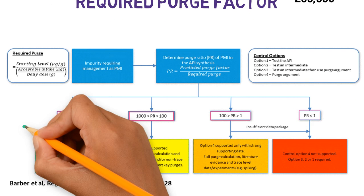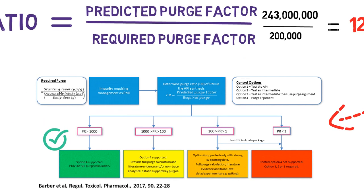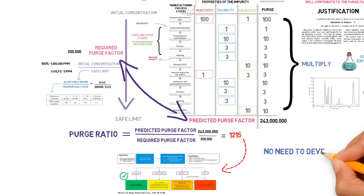This is only an example of how the purge factor can easily show that the manufacturing process is designed to eliminate a specific impurity, and that there is no need to develop and validate analytical methods. In this case, we did the calculation manually.